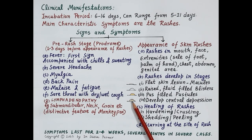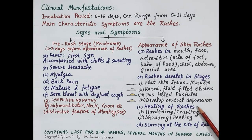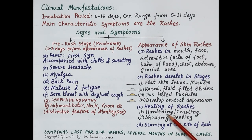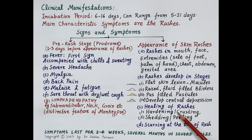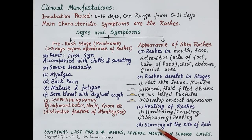This fully developed rash is a mature lesion and now starts to heal. The rashes first become hard — termed hardening or crusting of rashes — and then these hardened rashes are shed off from the skin, also termed peeling of rashes. The rashes are completely healed and disappear from the skin; however, scars can develop at the areas where the rashes were formed.